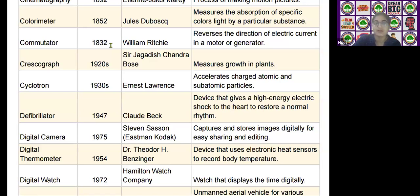The next scientific device is the crescograph, invented by Sir Jagadish Chandra Bose in the 1920s. It is used to measure growth in plants.